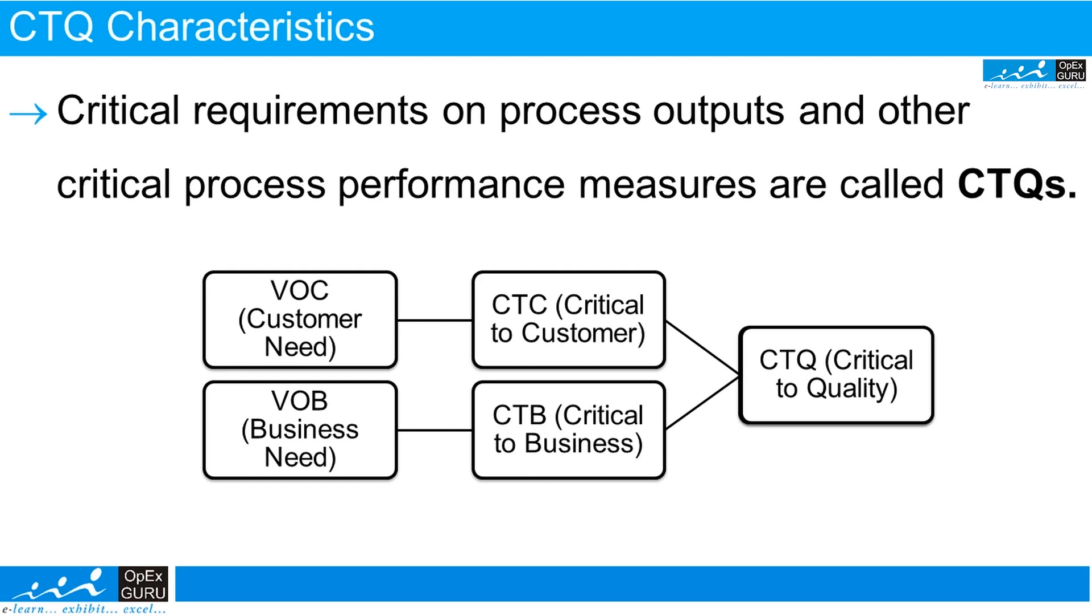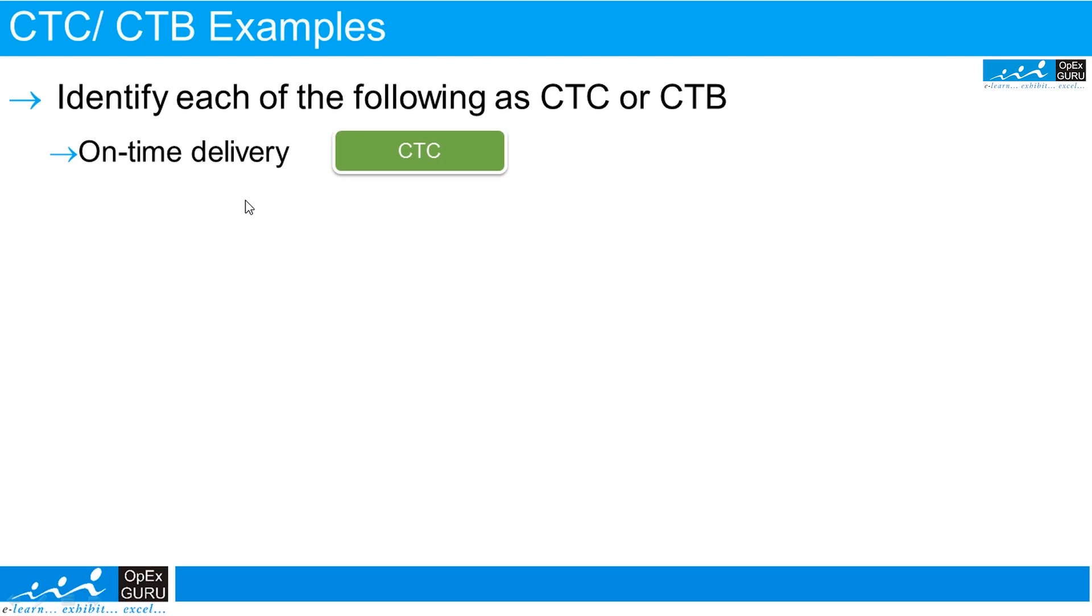Whether it is CTC or CTB, in Six Sigma language we call it CTQ only. Let's take some examples so it will be more clear. Identify the following as CTB or CTC. For example, on-time delivery is CTC, critical to customer. If you don't supply on time, the customer is affected, so it's critical to the customer.